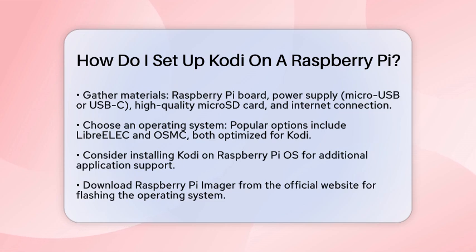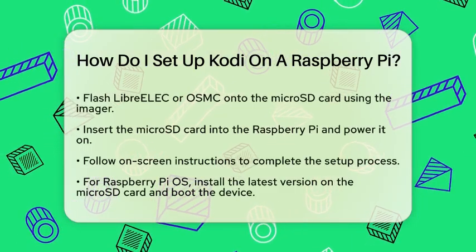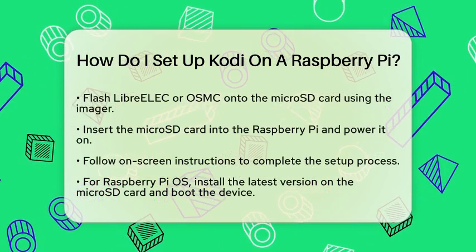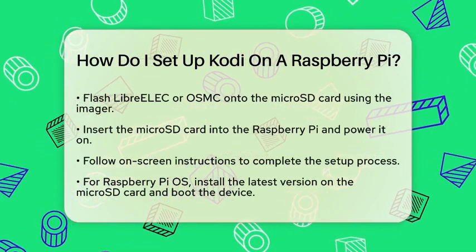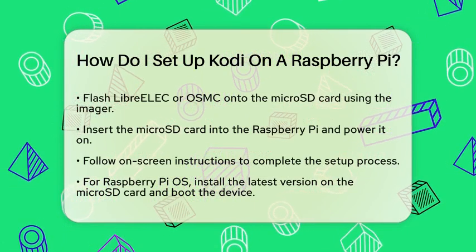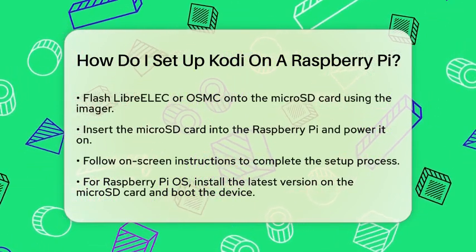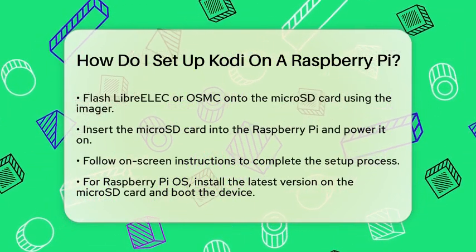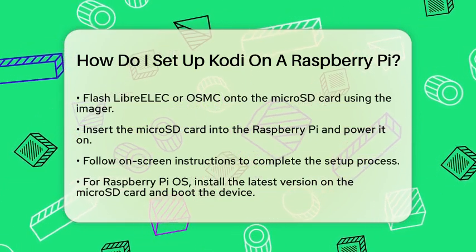Next, you have a few options for the operating system. One popular choice is LibreElec, which is designed specifically for Kodi and provides a smooth media center experience. Another option is OSMC, which also focuses on Kodi and offers an easy-to-use interface. If you prefer, you can install Kodi directly on Raspberry Pi OS, allowing you to run other applications alongside it.